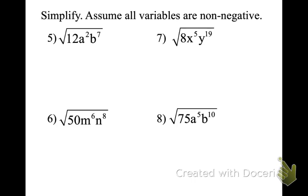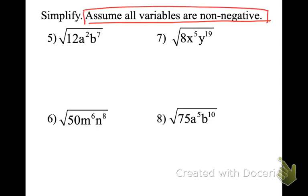When the directions say 'assume all variables are non-negative,' you do not have to deal with absolute value. They're assuming everything's positive. And in tonight's homework, they are assuming all variables are non-negative, so there is no absolute value being used. Once they give us that, likely for the rest of the chapter they're going to keep saying that. When we have 'assume all variables are non-negative,' the only thing we skip is the absolute value.